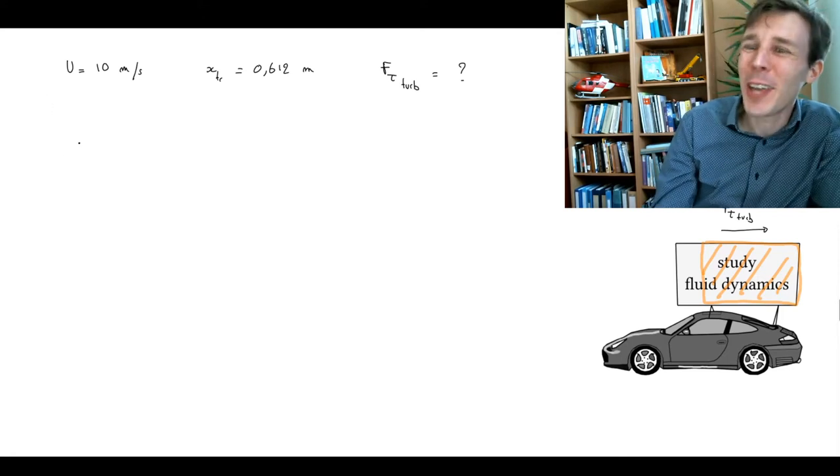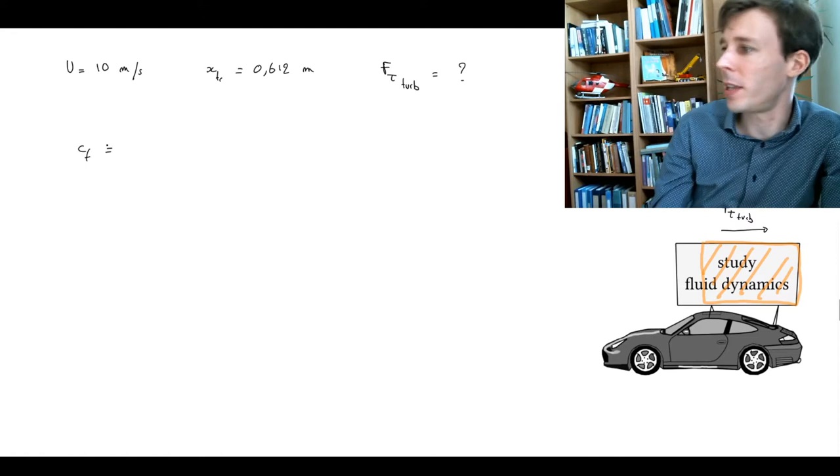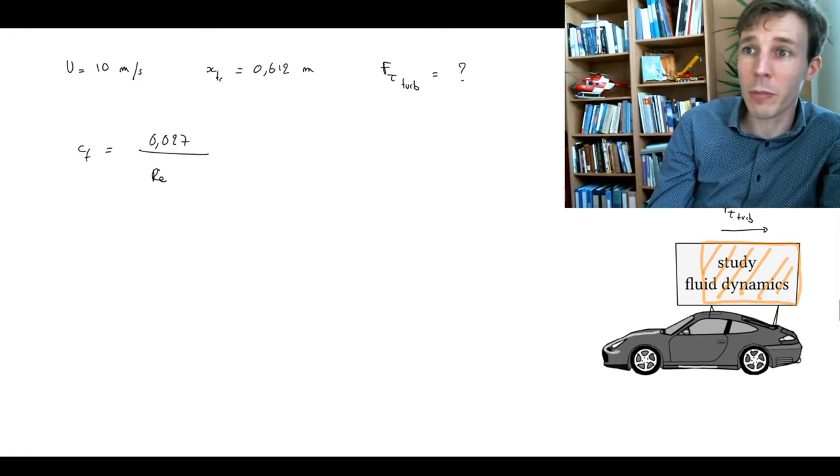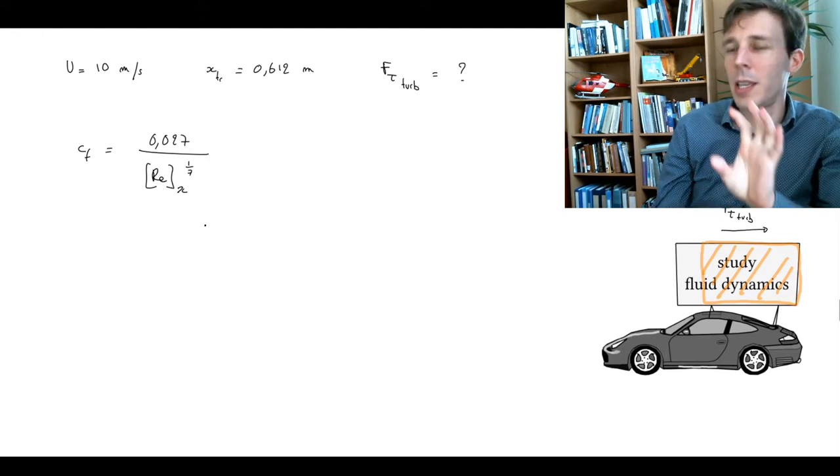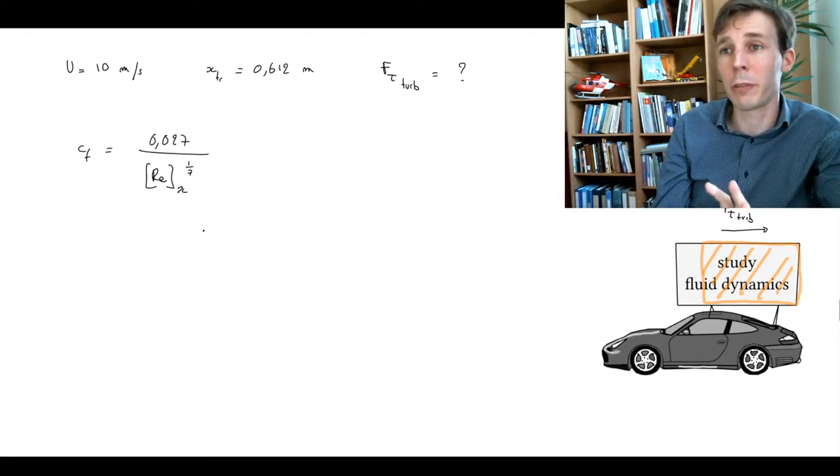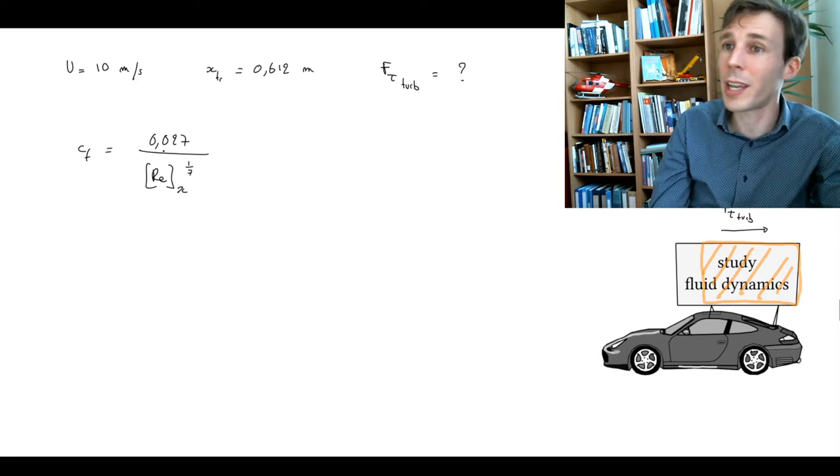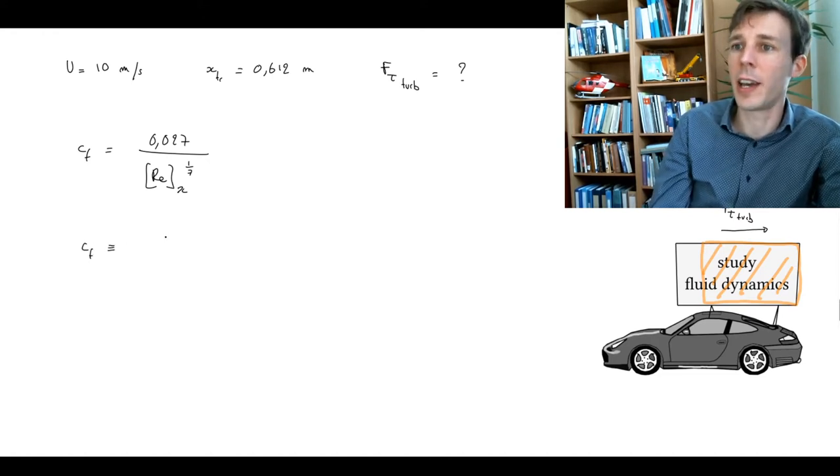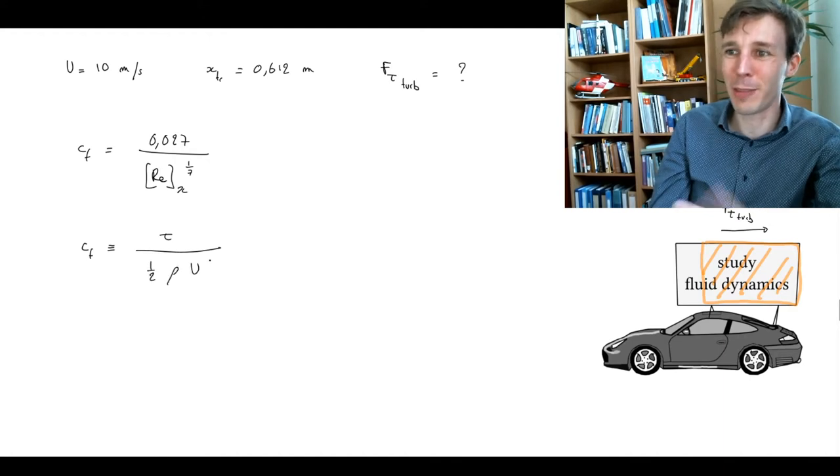We have from the formula sheet the friction factor coefficient C_F in a turbulent boundary layer expressed like so: it is 0.027 divided by the Reynolds number based on distance to the power 1 over 7. This is a rule of thumb, a model for how friction develops inside the turbulent boundary layer. The friction factor is defined as shear divided by 1/2 rho times the mainstream velocity squared.